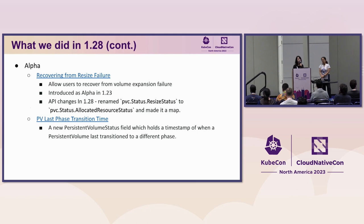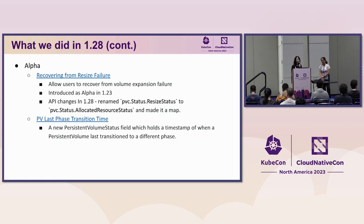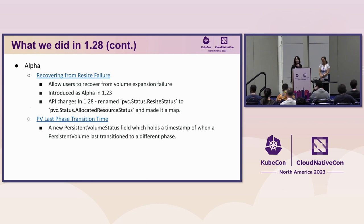We also have other features in 1.28. Recovering from resize failure is a feature introduced in 1.23, and we have been making enhancements. This feature allows a user to retry volume expansion by specifying a smaller size than originally requested so that we have a better chance of success. In 1.28, we also made some additional API changes. The second alpha feature introduced in 1.28 is PV last phase transition time. In the persistent volume status, there is now a new field with a timestamp that shows when the PV moved to a new phase.